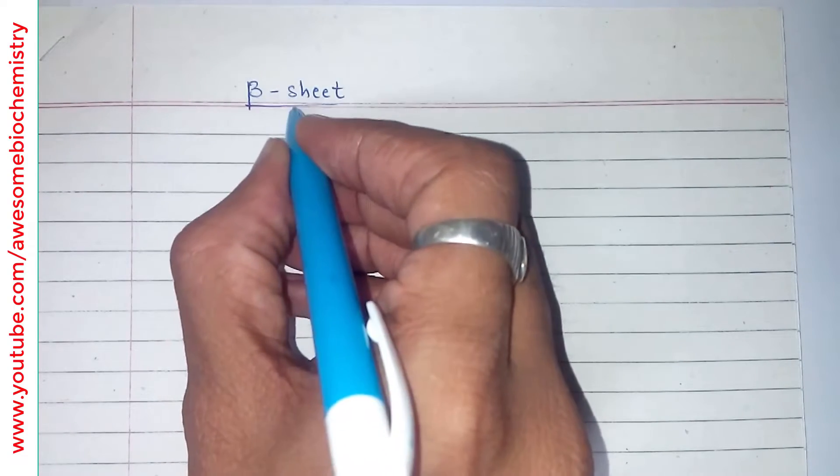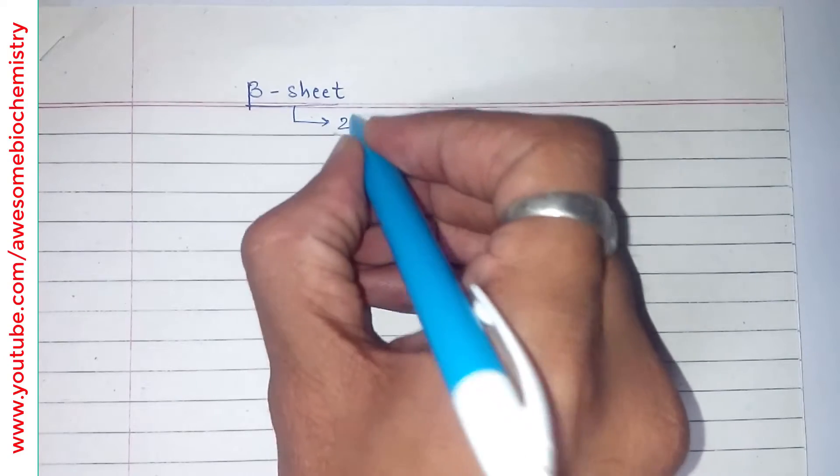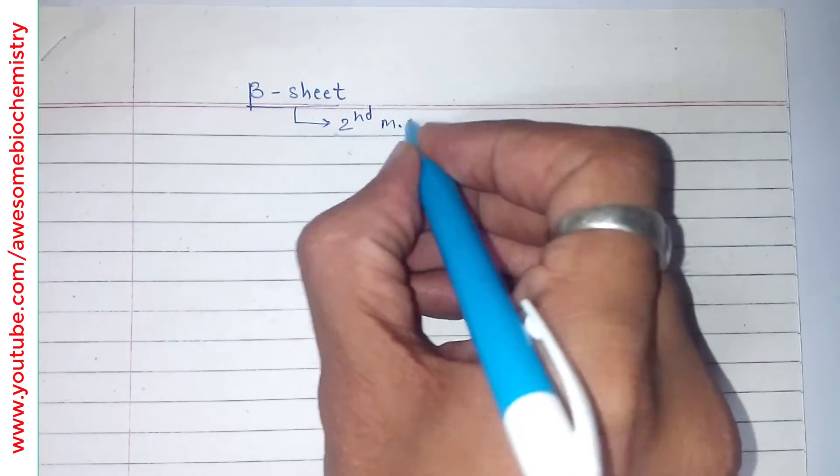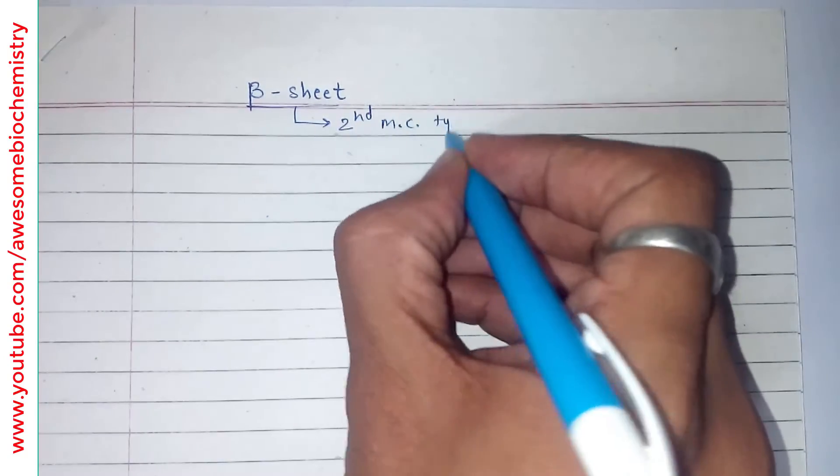In this video tutorial, I am going to discuss about the beta sheet. This beta sheet is one of the most prominent secondary structures. Actually, this is the second most common type of secondary structure.